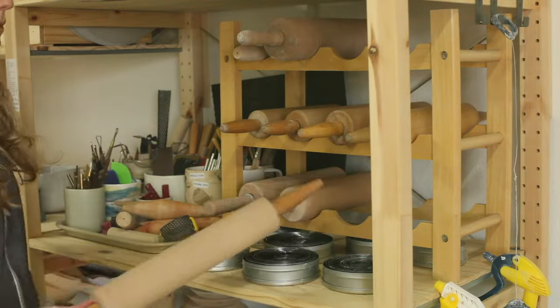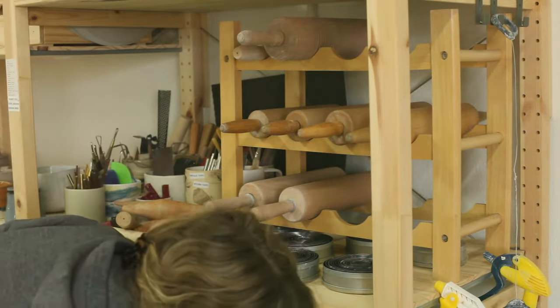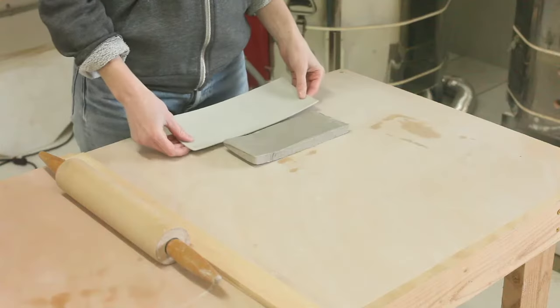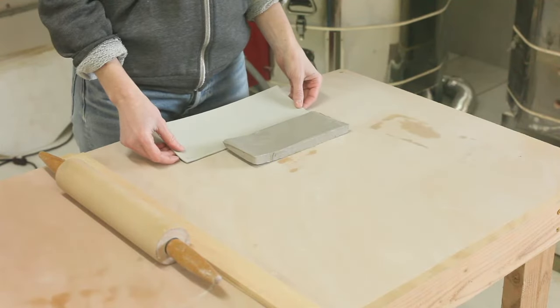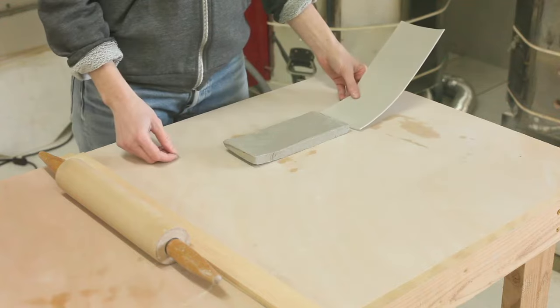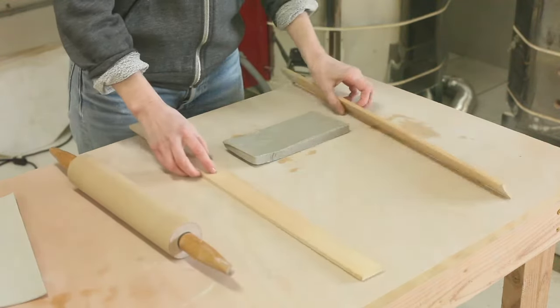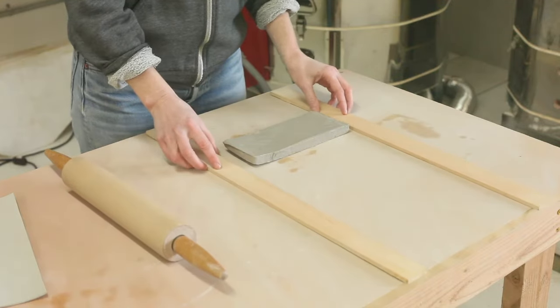We're going to make our slabs using a rolling pin and some slats of wood to keep the thickness even. Looking at my project template I can see that I will need to stretch this clay out to be longer and also slightly taller. I'll usually start with the shorter side which is going to be the height of this piece.